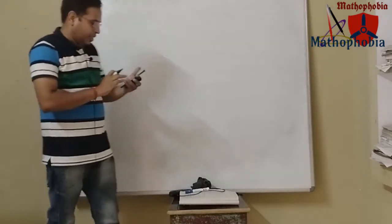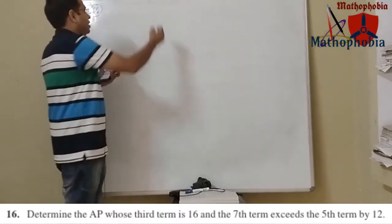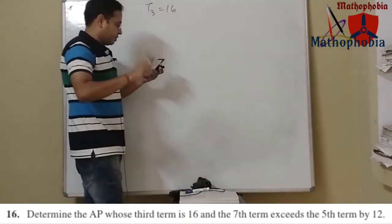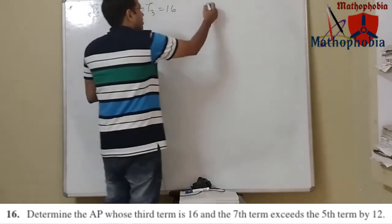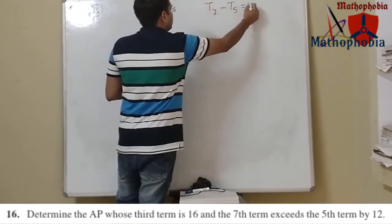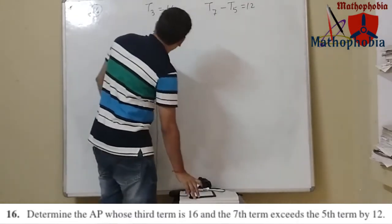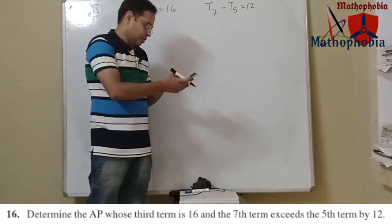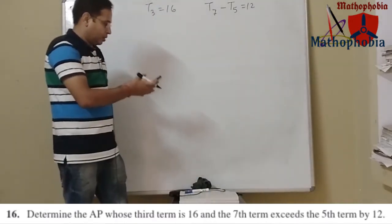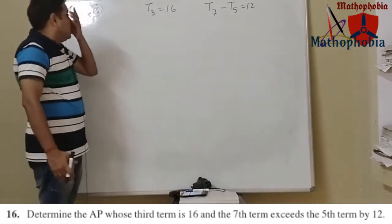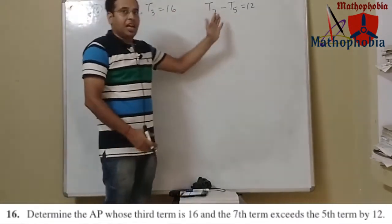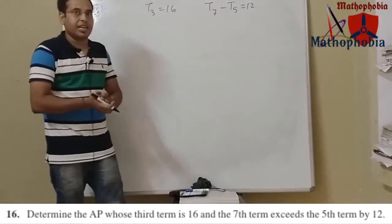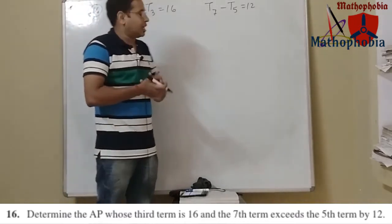Question number 16: determine the AP whose third term is 16 and the seventh term exceeds the fifth term by 12. We will form two equations to get the values of a and d, and once those are known we can easily determine the arithmetic progression.